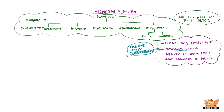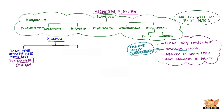Thallos in Greek means green shoot and Phyta indicates plants. Plants in this group, Thallophyta, do not have a differentiated plant body — you cannot make out the leaf, stem, or roots. You might have seen algae growing in ponds or in aquariums; algae are thallophytes. As these are aquatic, there is no need for food and water transportation, so they lack vascular tissues.